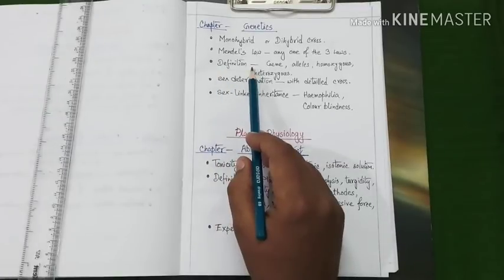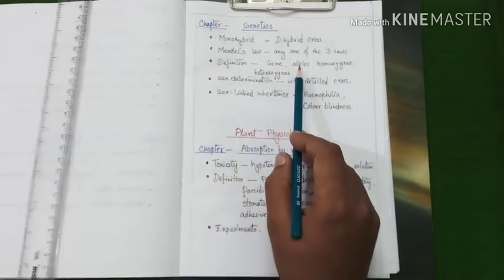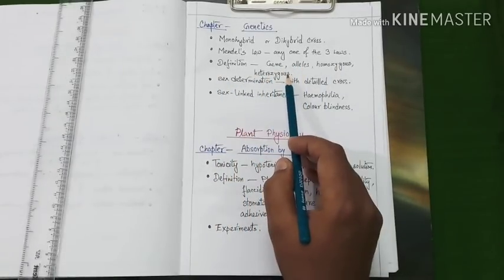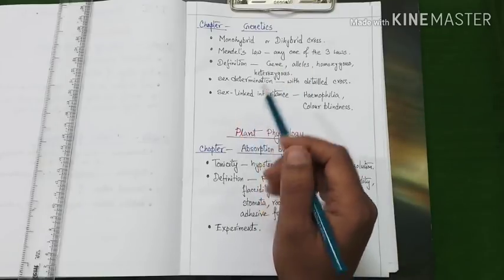Next, you have to prepare some definitions - definitions like genes, alleles, homozygous and heterozygous conditions, etc.